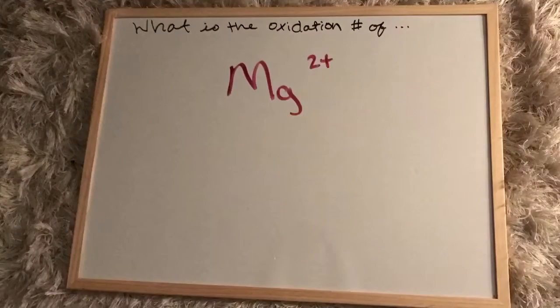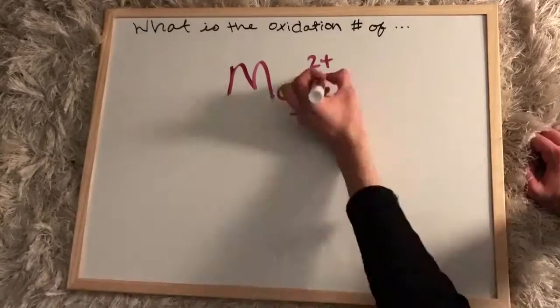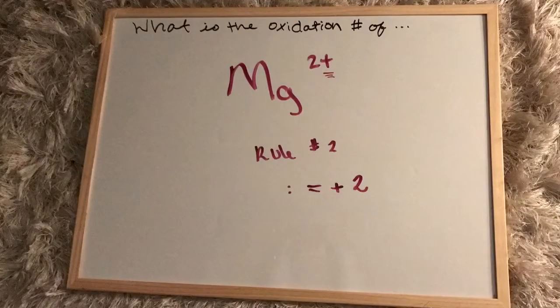Well, let's go with the magnesium ion. Its charge is two, but would it be positive or negative two? Well, according to rule number two, it has to be that of the charge, so it's positive two.